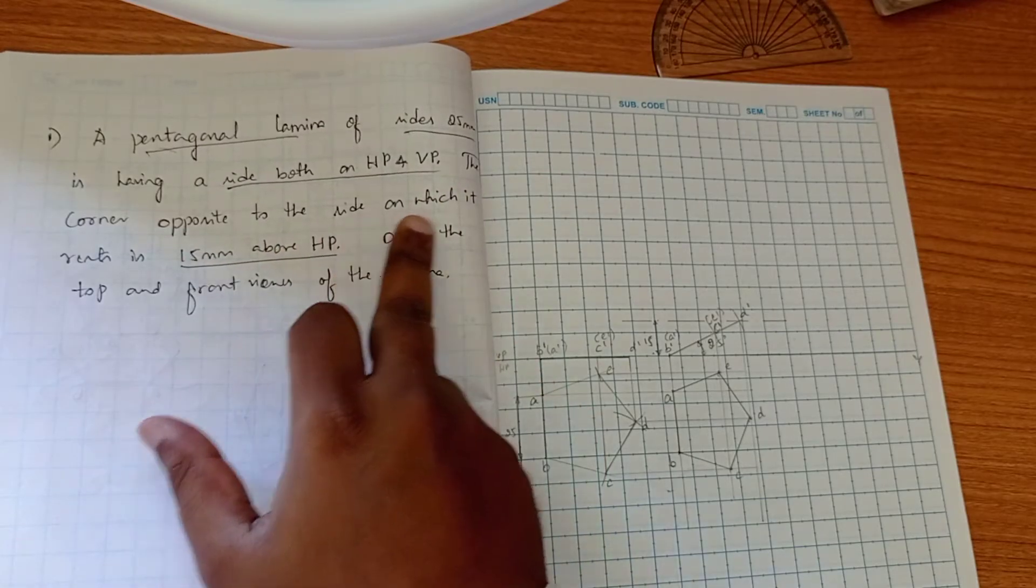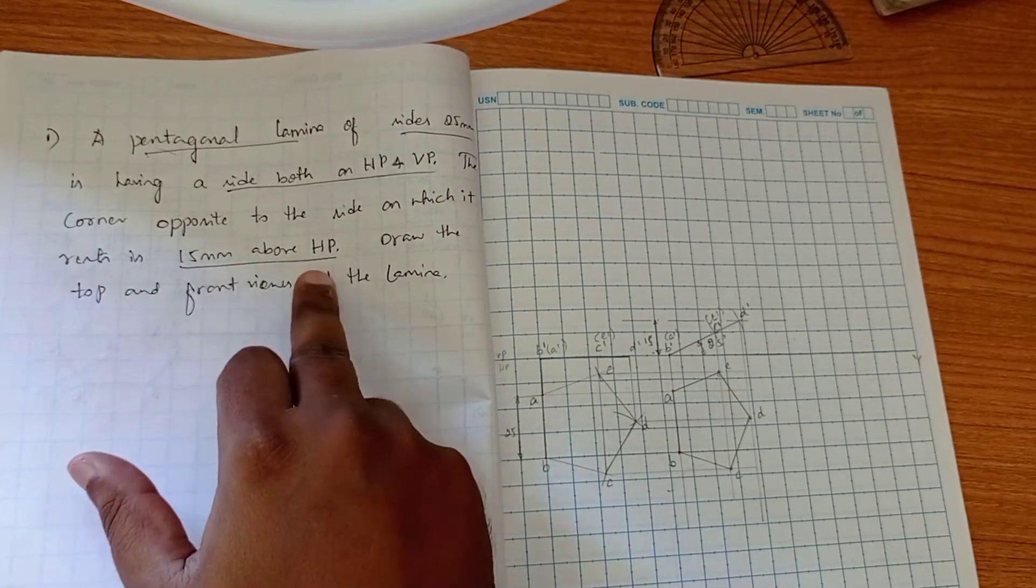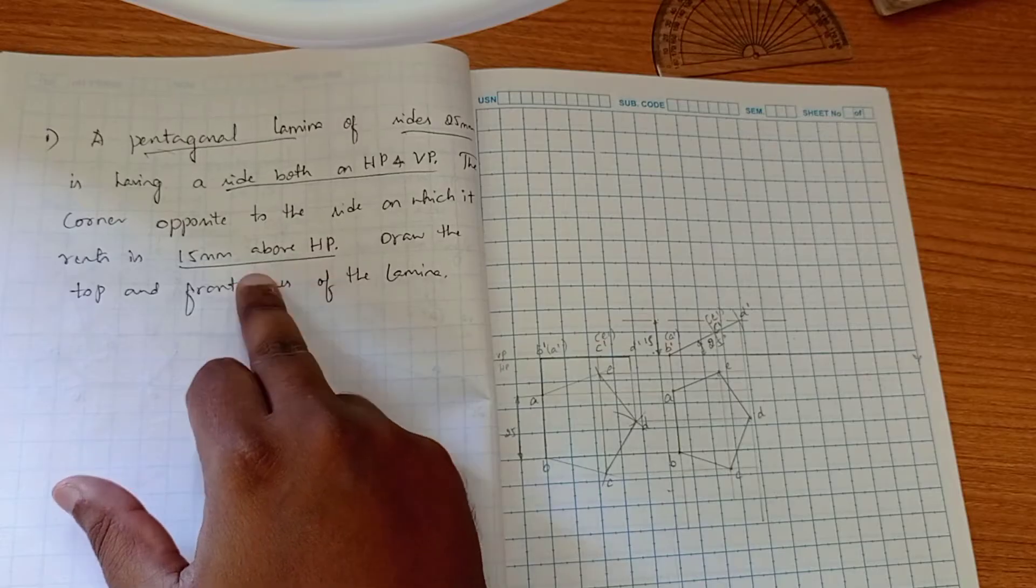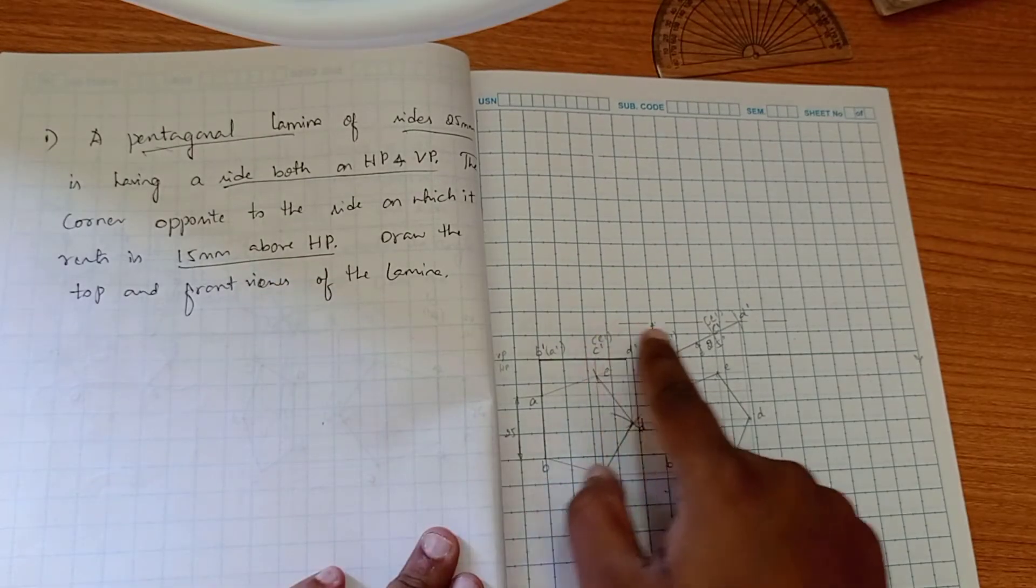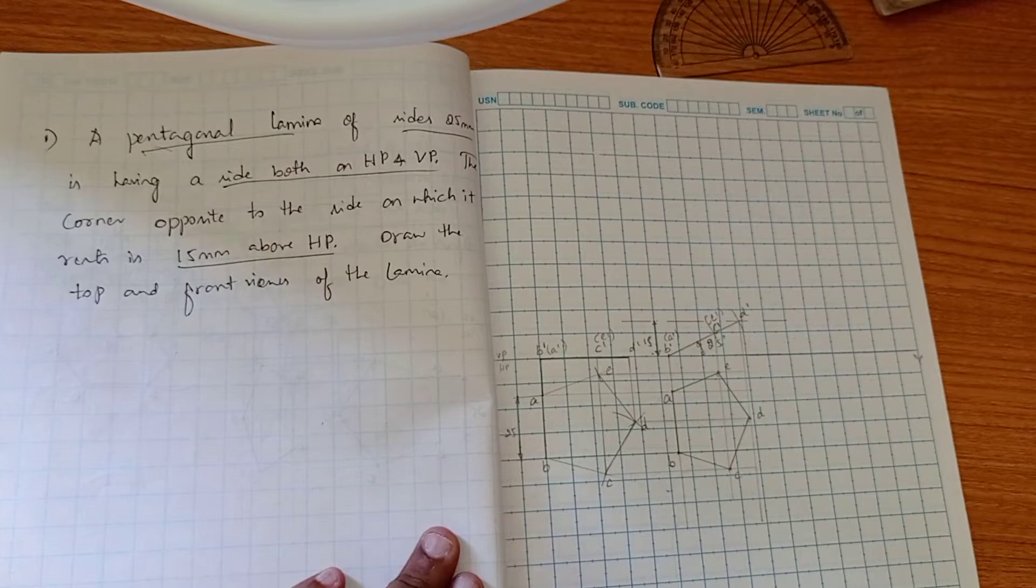The corner opposite to the side on which it rests is 15 mm above HP. That means it is indicating the second position. So drawing a 15 mm line and drawing the locus, you can construct the second position.